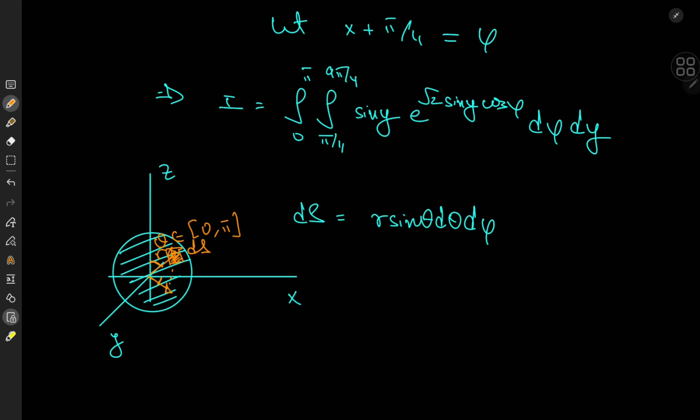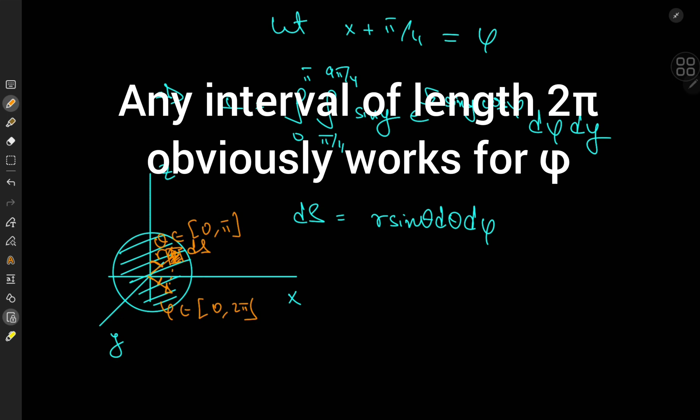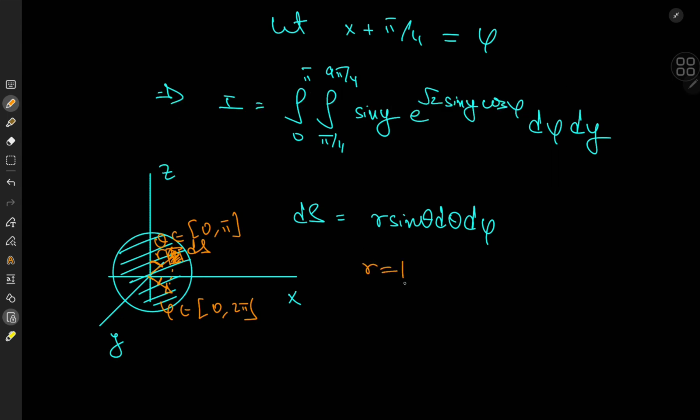And from here you can notice the similarities. So in our case we have r actually equal to one, theta is actually y, and phi is still phi.